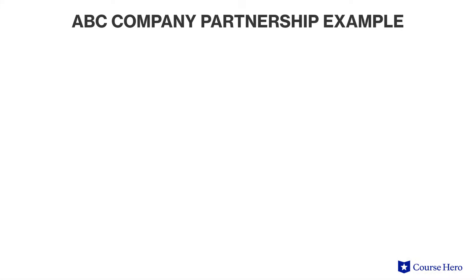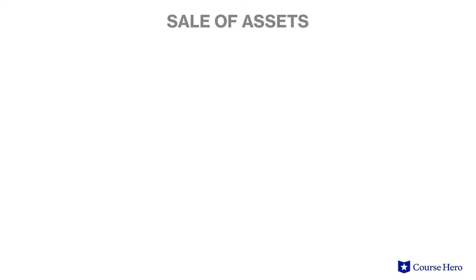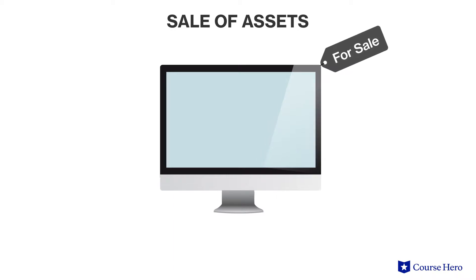Suppose that the non-cash assets of ABC Company are carried on the balance sheet at sixty-five thousand dollars. This partnership has three partners — Andy, Samantha, and Kim — who share income at forty percent, forty percent, and twenty percent respectively. They each currently have twenty-five thousand dollars in their capital accounts, the partnership's cash balance is fifteen thousand dollars, and there are five thousand dollars in liabilities. The partners choose to dissolve the partnership because they no longer get along.